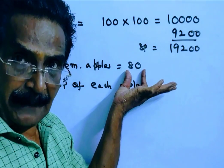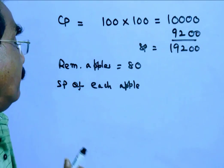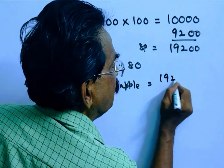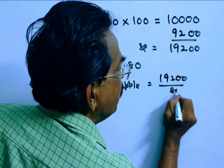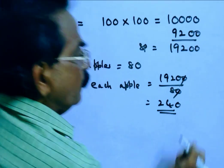Then the selling price of each apple equals 19,200 divided by 80, which equals 240 rupees. So he has to sell each apple for rupees 240.